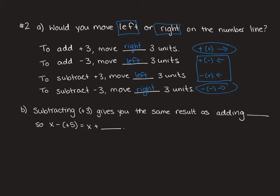Question B is going to ask you to make some connections. Subtracting positive 3 gives you the same result as adding -3, so x minus positive 3 is the same thing as x plus -3. When we switch the operation we also switch the sign.